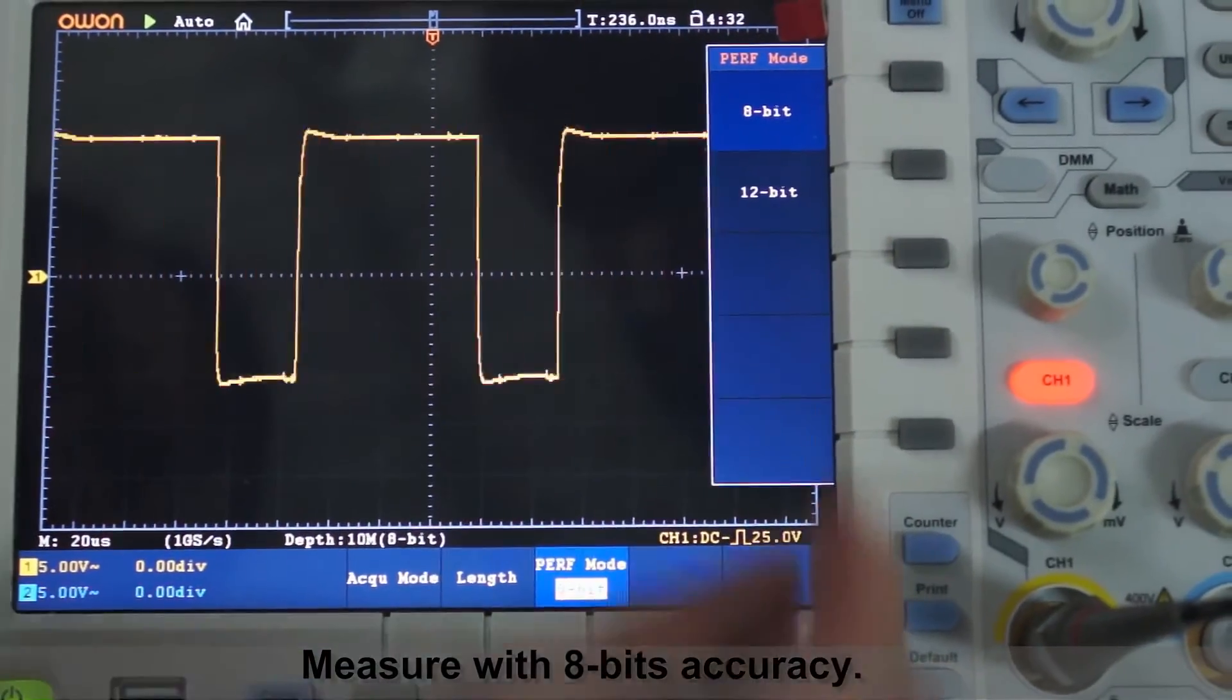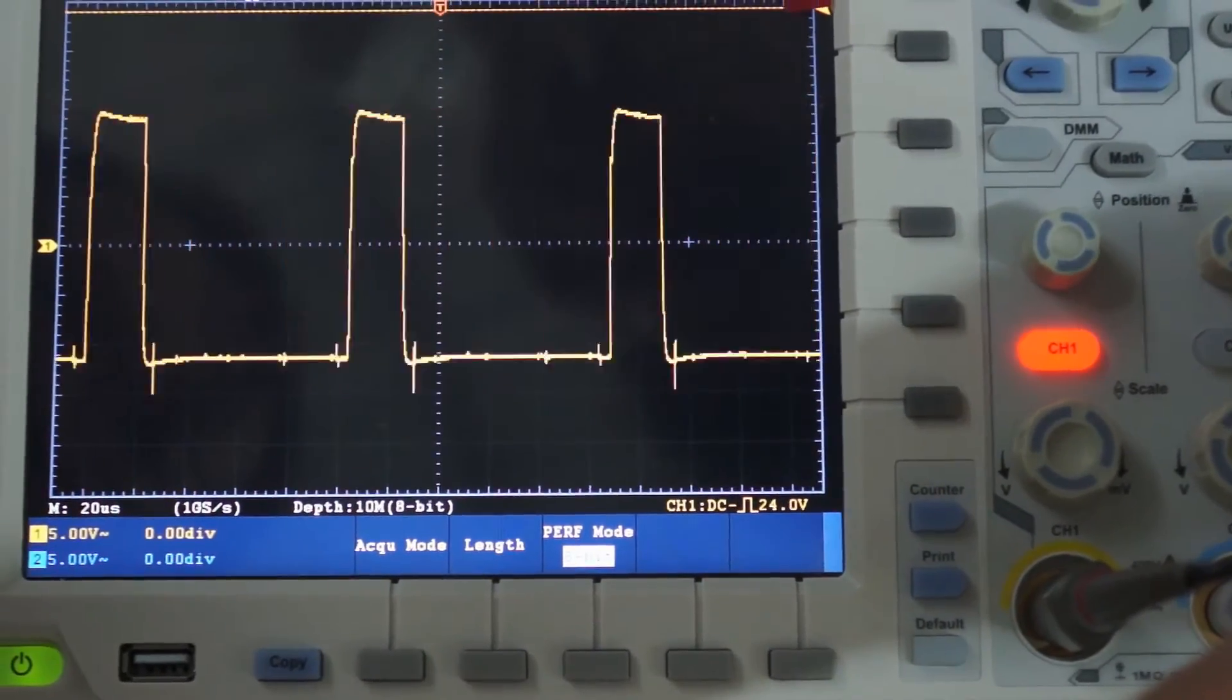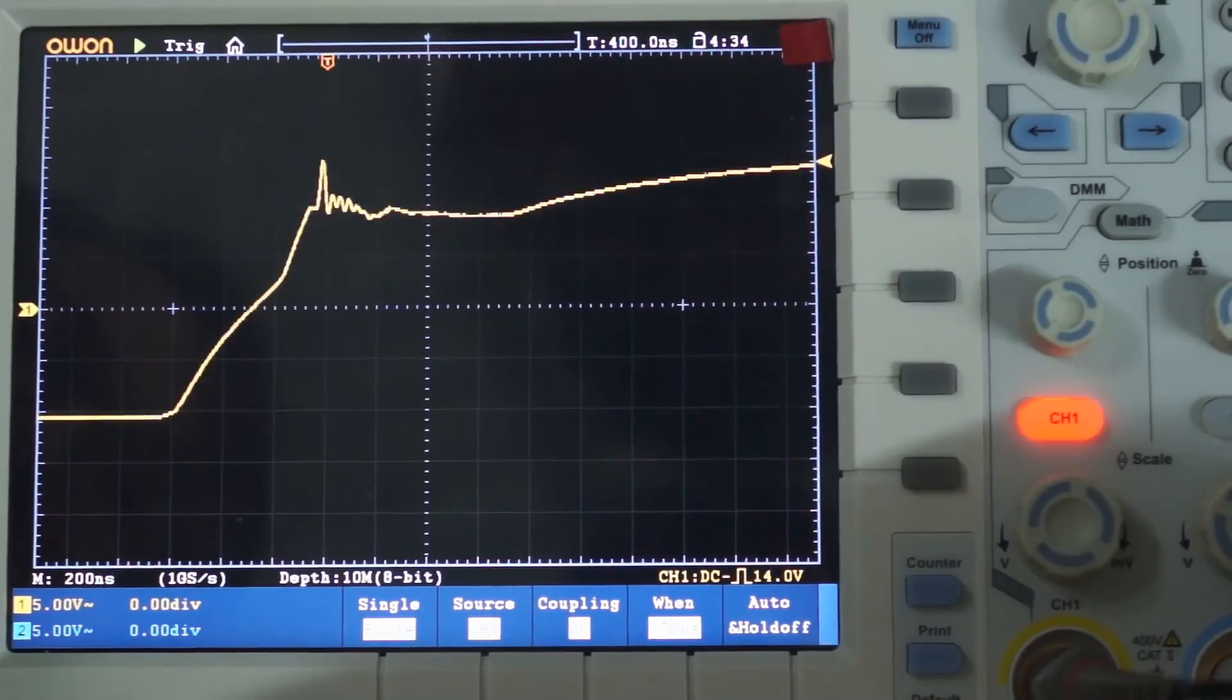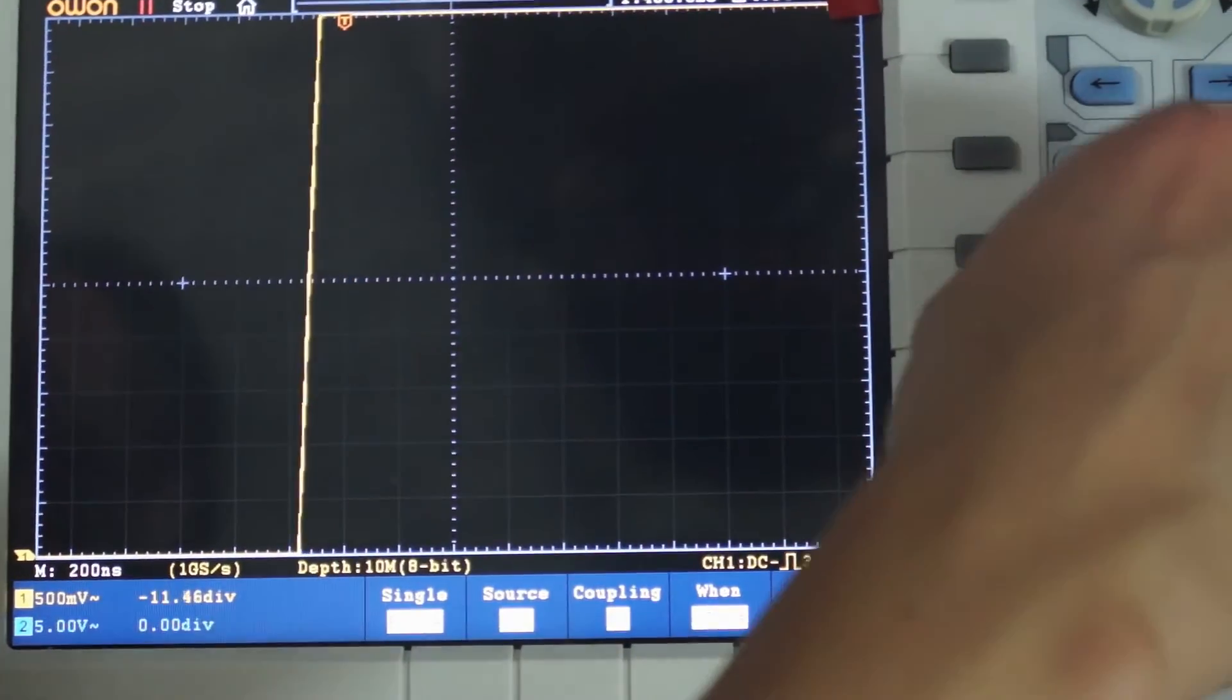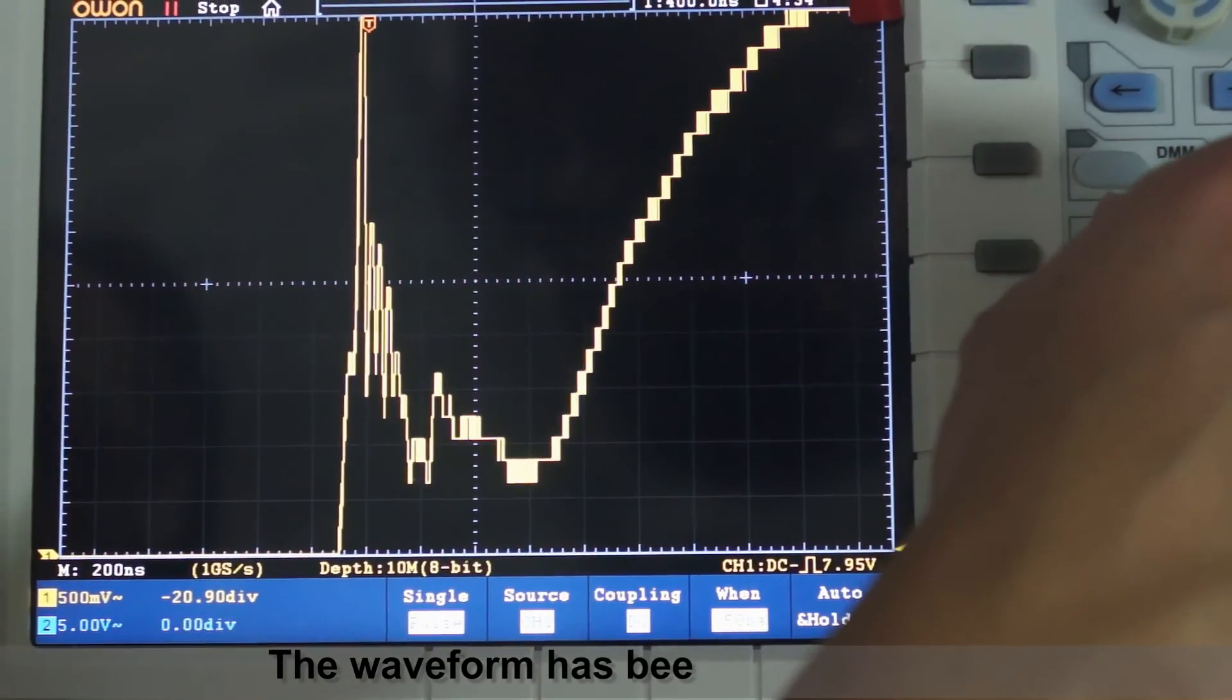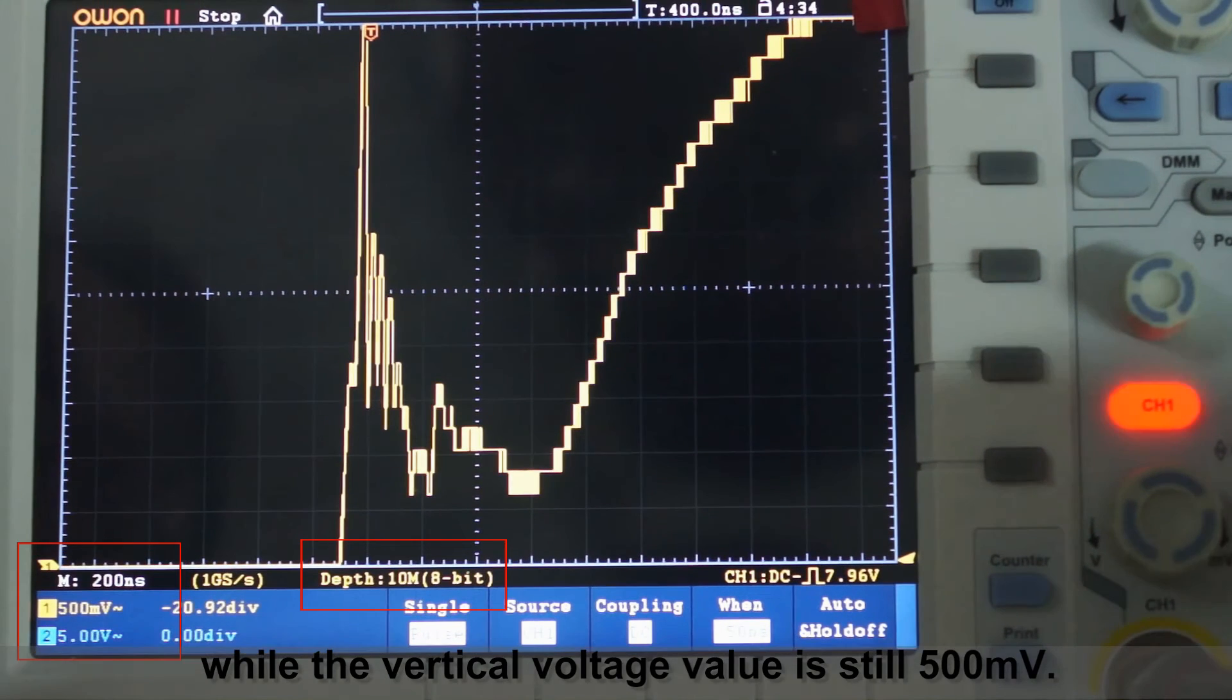Measure with 8-bit accuracy. The waveform has been anamorphic, while the vertical voltage value is still 500 microvolts.